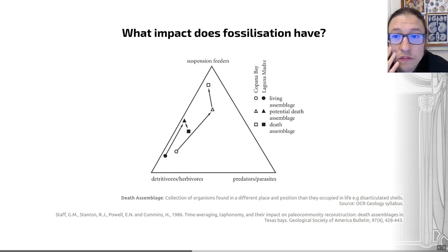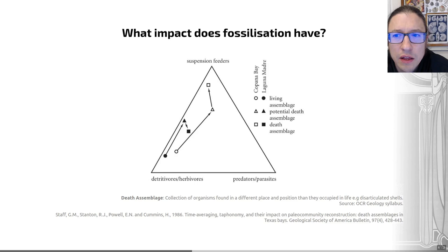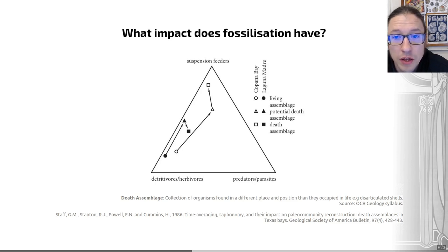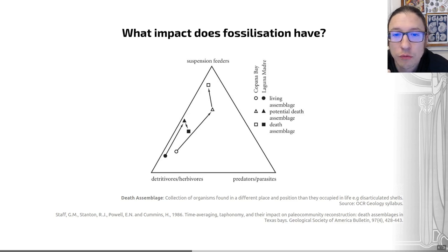The first thing we have to consider as paleontologists, if we want to understand a fossilized ecosystem, is to consider the biases that fossil preservation imprints upon our picture of that ecosystem. This reflects a thing called taphonomy — that's the way by which living organisms become fossilized. An obvious bias to consider is the fact that hard parts in organisms tend to preserve quite easily in the fossil record, whereas soft parts don't.